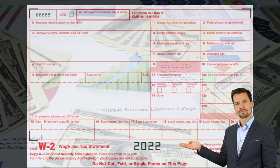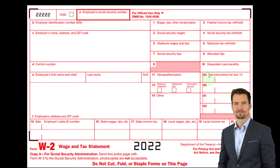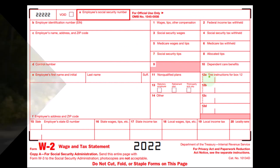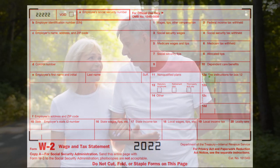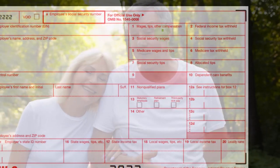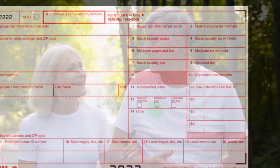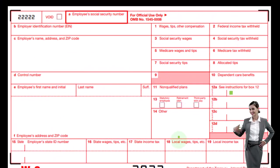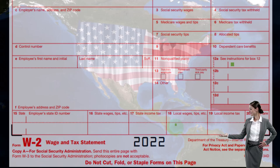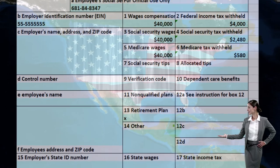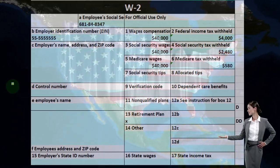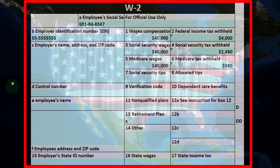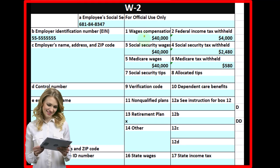Box 12 is another important box where you might have an item giving you more information about what's being included — for example, a retirement plan or 401k, which would also be reflected as a reduction in taxable income in box 1. We also have the retirement plan box, box 13, which would be checked off if that was the case. On the bottom you've got the state taxes, similar to boxes 1 and 2 but on the state side. This is a mock W-2 generated in Excel, just to give an example.